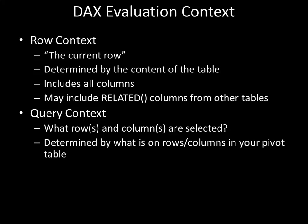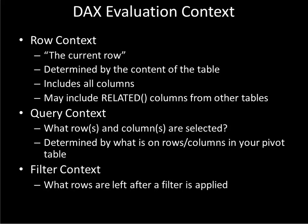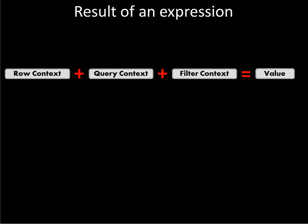The next is the query context, which deals with what columns are really selected in our pivot table. If we're in Excel and we have a pivot table and we select only one measure and two columns from a dimension table, then the query has really limited what's available to our calculation. And the final, perhaps most difficult to get your head around, is the filter context — this is what rows are left after a filter is applied.